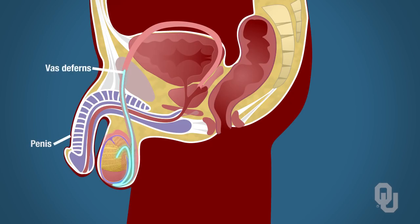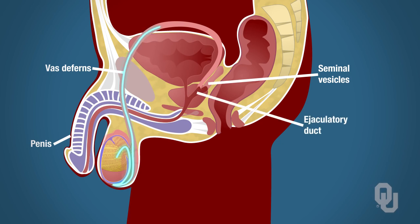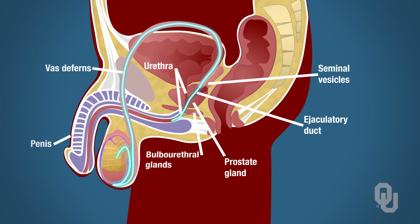Now the sperm are in the vas deferens. The vas deferens connects with the seminal vesicles to form the ejaculatory duct, at which point the sperm is mixed with fluid from the seminal vesicles. The ejaculatory duct penetrates through the prostate gland to join the urethra. The sperm wind up in the urethra, which also receives substances from the bulbourethral glands. Thus, both urine and sperm are in the urethra.